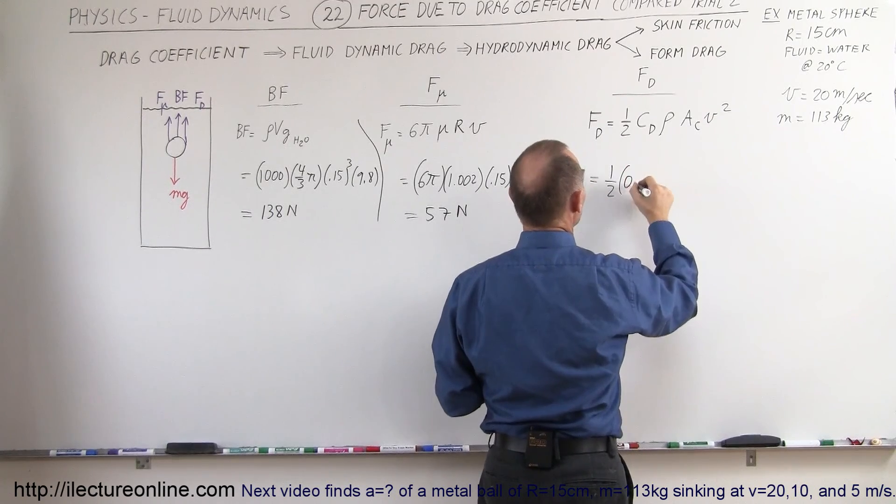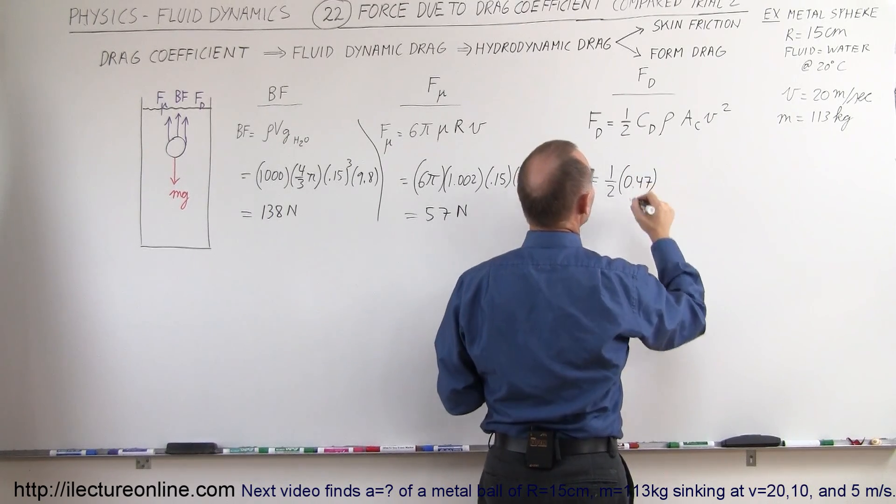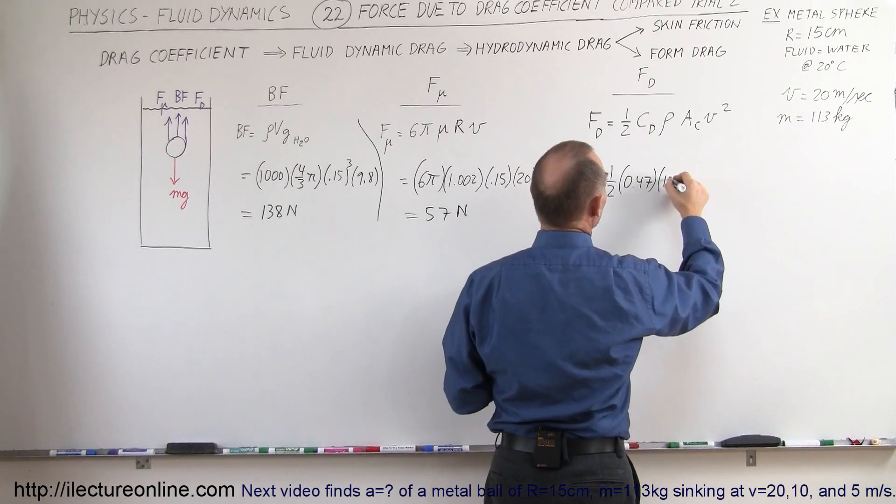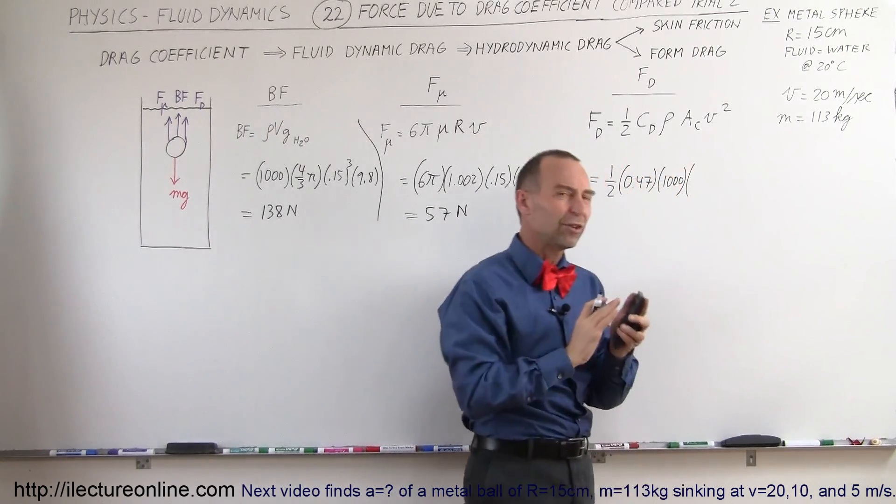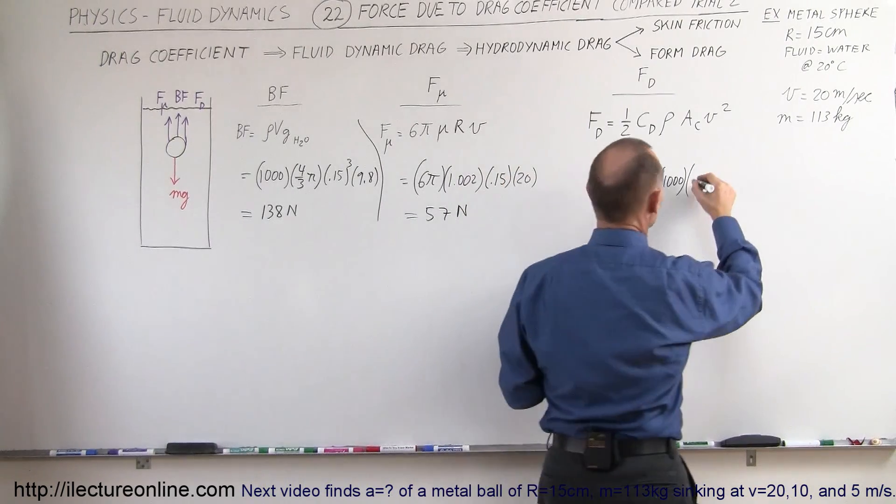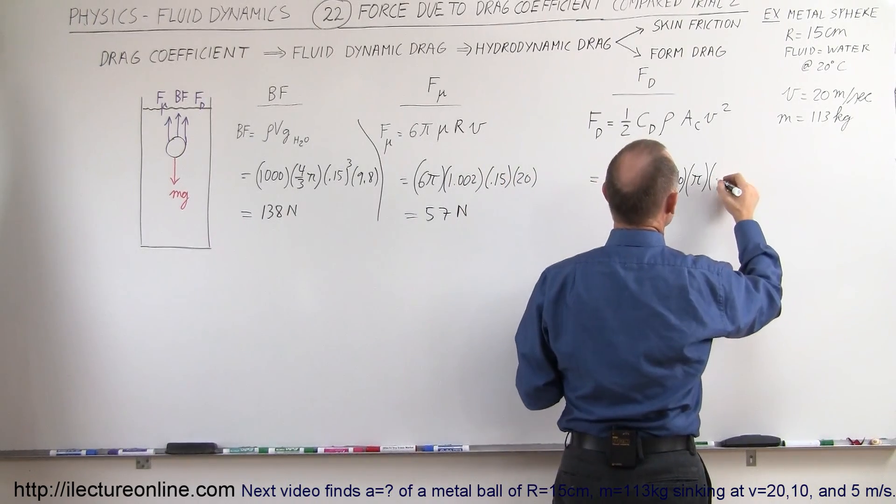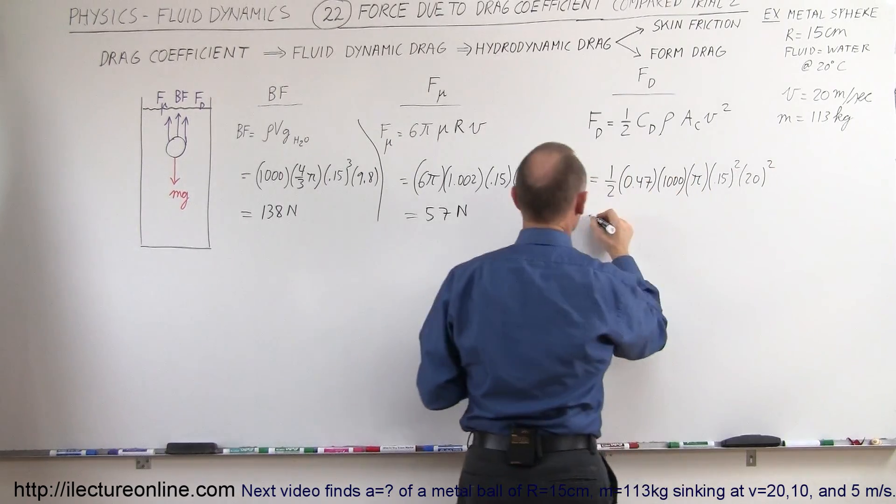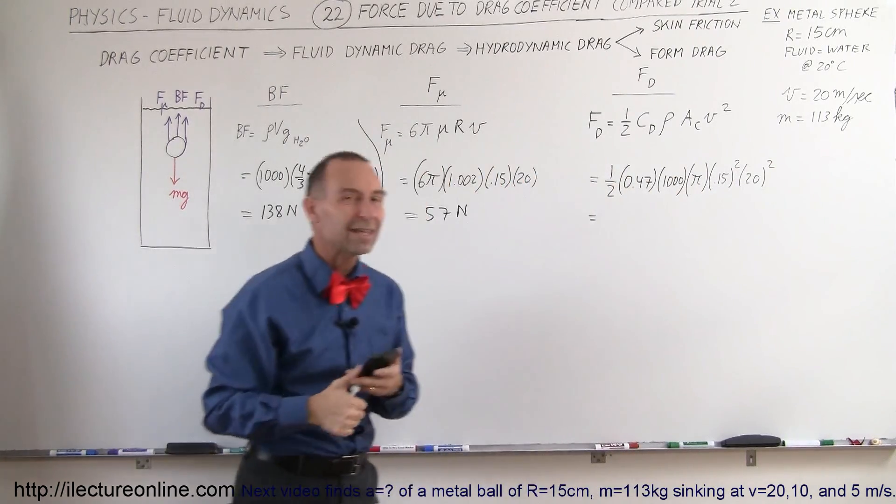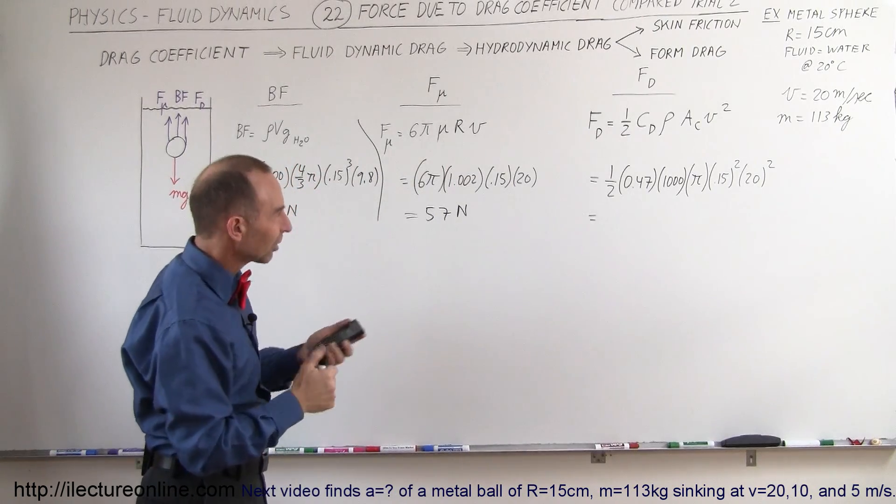Since it's a sphere the drag coefficient is 0.47. The density of the liquid is 1000 kilograms per cubic meter. The cross-sectional area since it's a sphere would be πr², so it would be π times the radius which is 0.15 squared, and then velocity would be 20 meters per second squared. So let's see how large the drag forces are on an object like that.